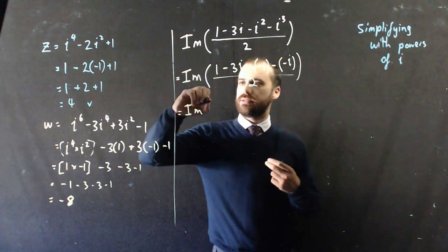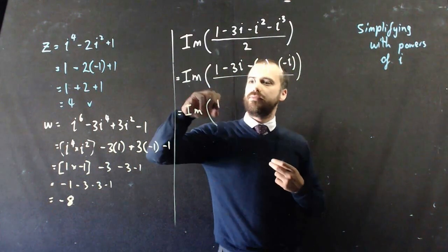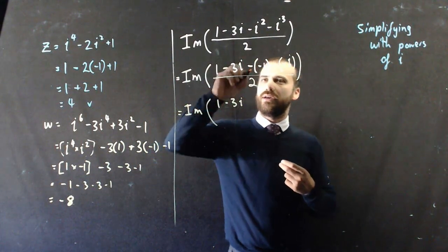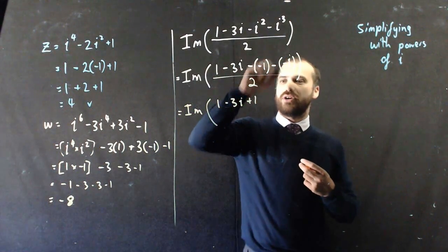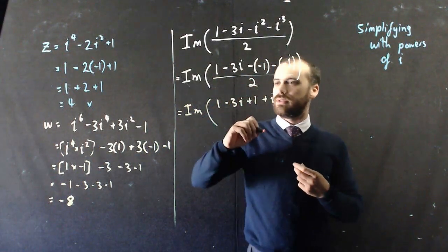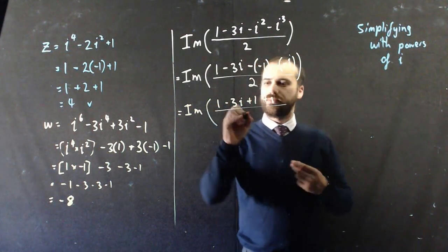So let's simplify this. We have 1 minus 3i plus 1 plus i, all over 2.